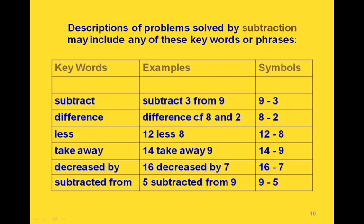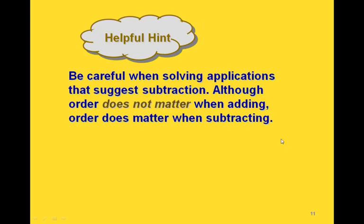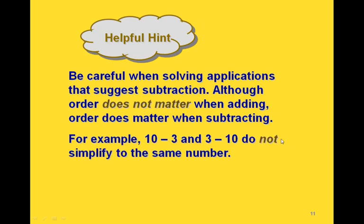Here are some keywords that signal subtraction. Subtraction can be a little bit harder because it does make a difference which order you write the numbers in. When we say 'subtract 3 from 9,' the 9 goes first because we're taking 9 and subtracting 3 from it — the order is switched from the way it's written. The difference of 8 and 2 comes out in the same order. So does '12 less 8,' '14 take away 9,' and '16 decreased by 7.' But '5 subtracted from 9' means we put 9 first, then 5.